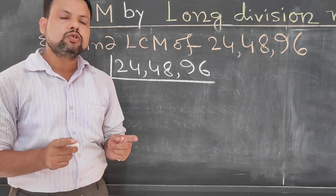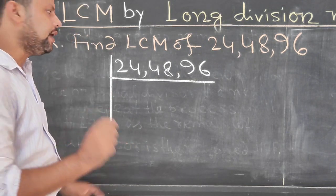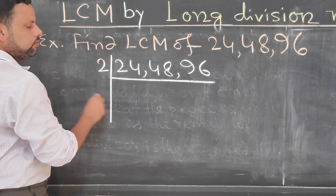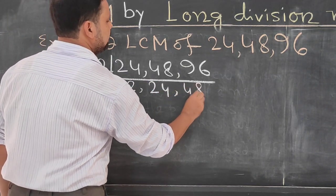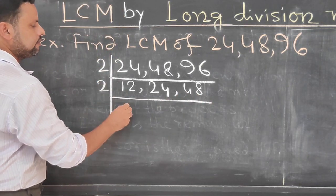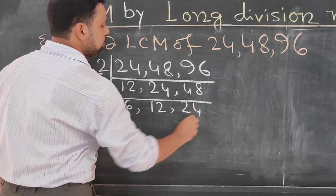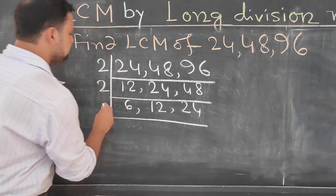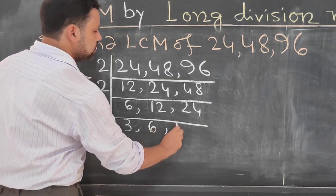At least two numbers will be divisible with this common factor. Then divide by 2, then 12, 24, 48. Again we have to divide with common divisor. Then 6, 12, 24. Again we have to divide this one by 2: 3, 6, 12.